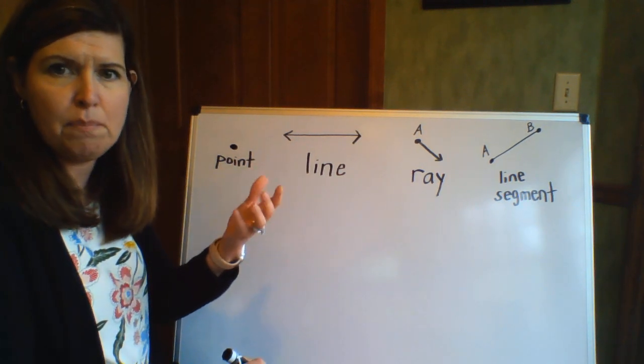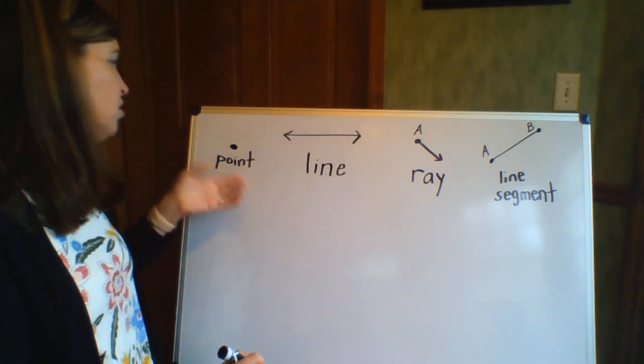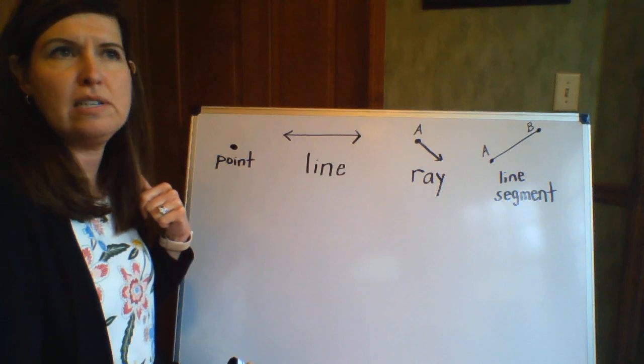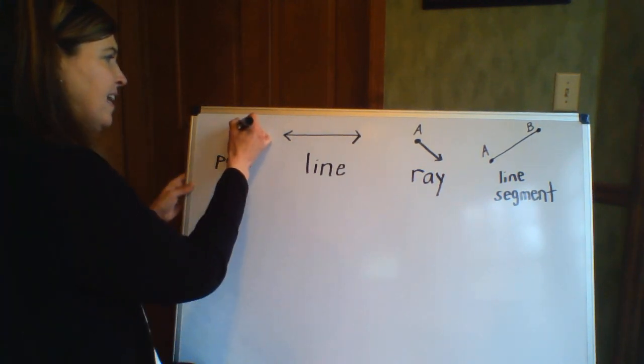Sometimes a point could also be labeled as a letter. So just for instance, this point is going to be—I'm going to call it S just because my last name starts with an S.